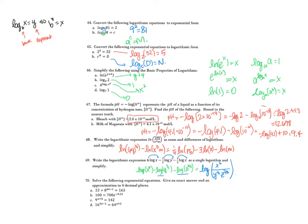Solve the following exponential equations, giving an exact answer and an approximation. For this one, isolate 8^(4x-1) by subtracting 22 from both sides: 163 minus 22 gives 141, so 8^(4x-1) equals 141. Take the natural log of both sides: (4x - 1) times ln(8) equals ln(141). Divide both sides by ln(8) to get 4x - 1 equals ln(141) divided by ln(8).